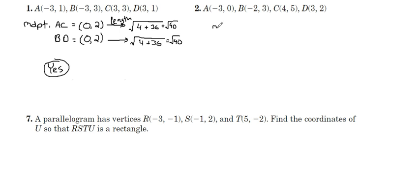Let's try it again with number 2. We'll do our midpoint of AC and BD. Okay, AC midpoint. 5 plus 0 is 5, divided by 2 is 2.5. That's our y coordinate midpoint. 4 plus negative 3 is 1, 1 divided by 2 is 0.5.